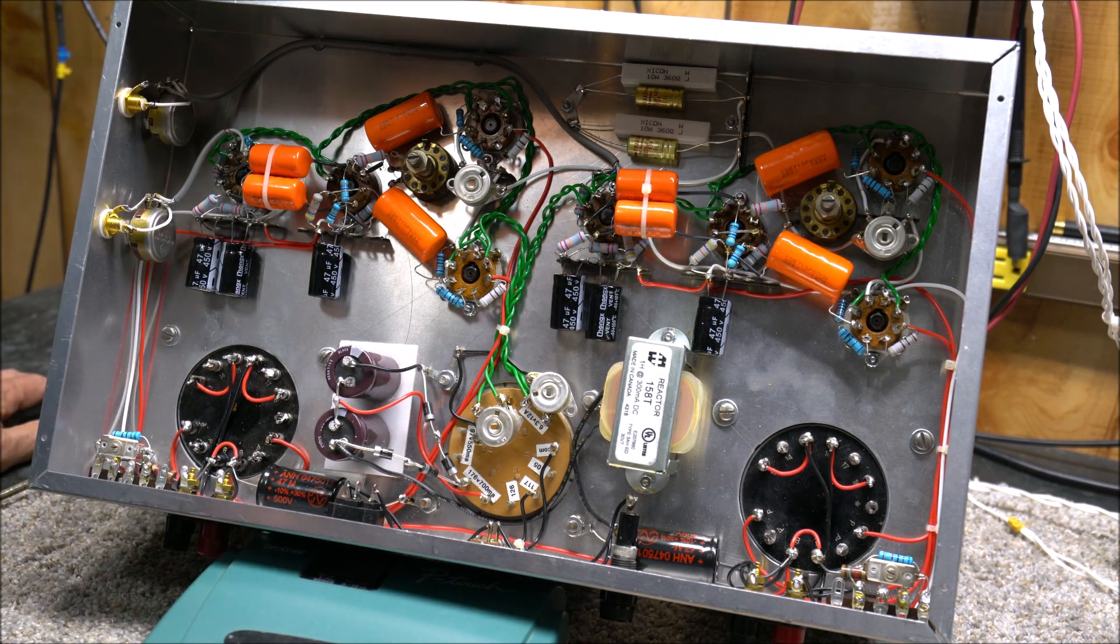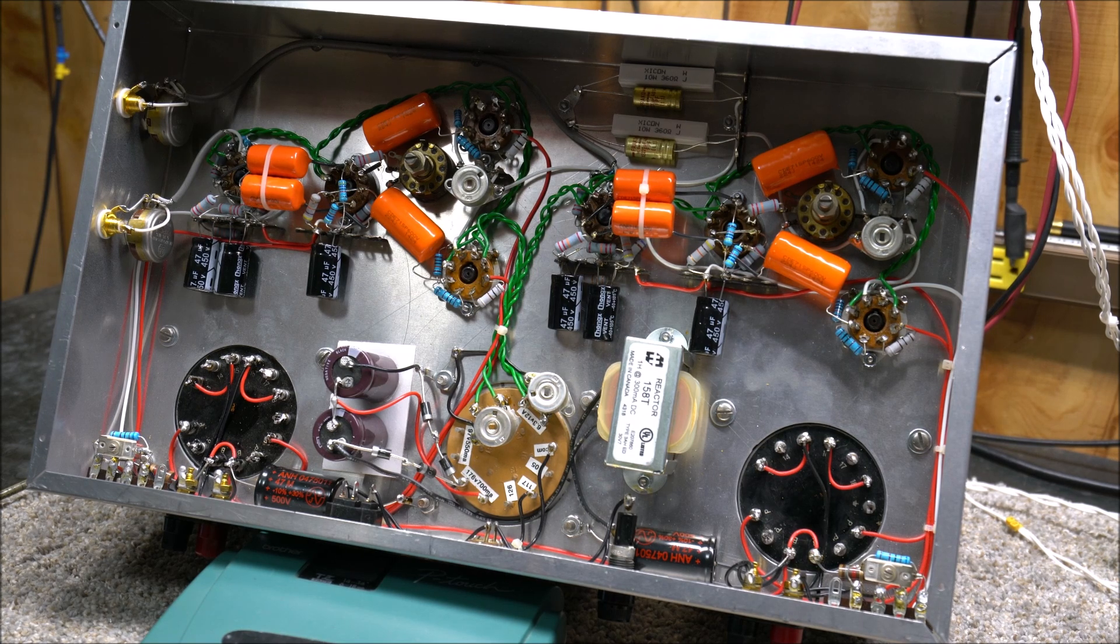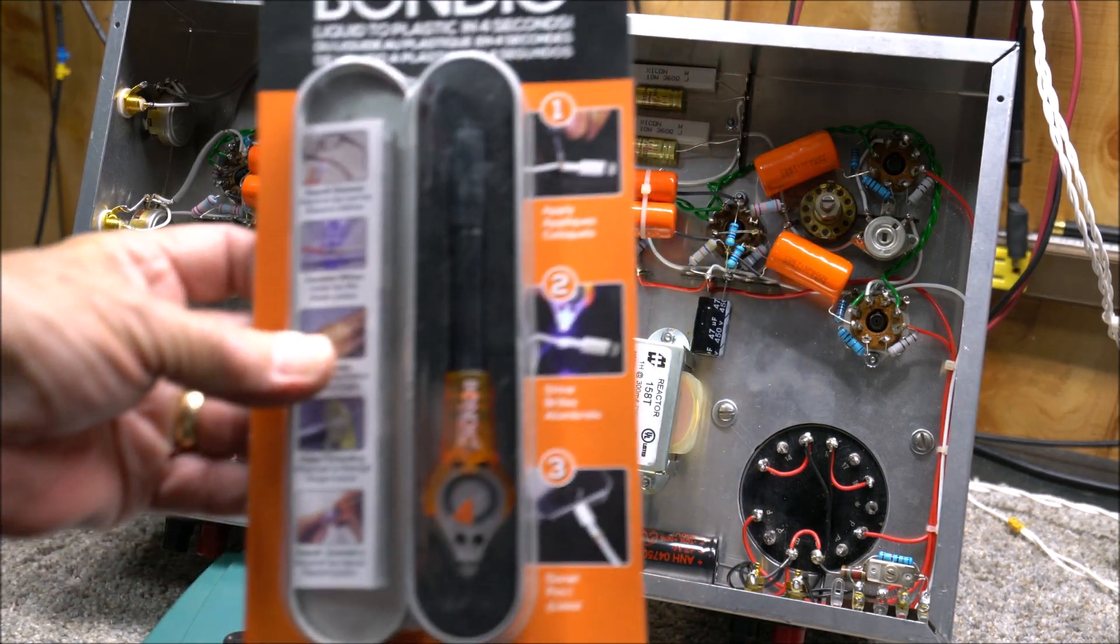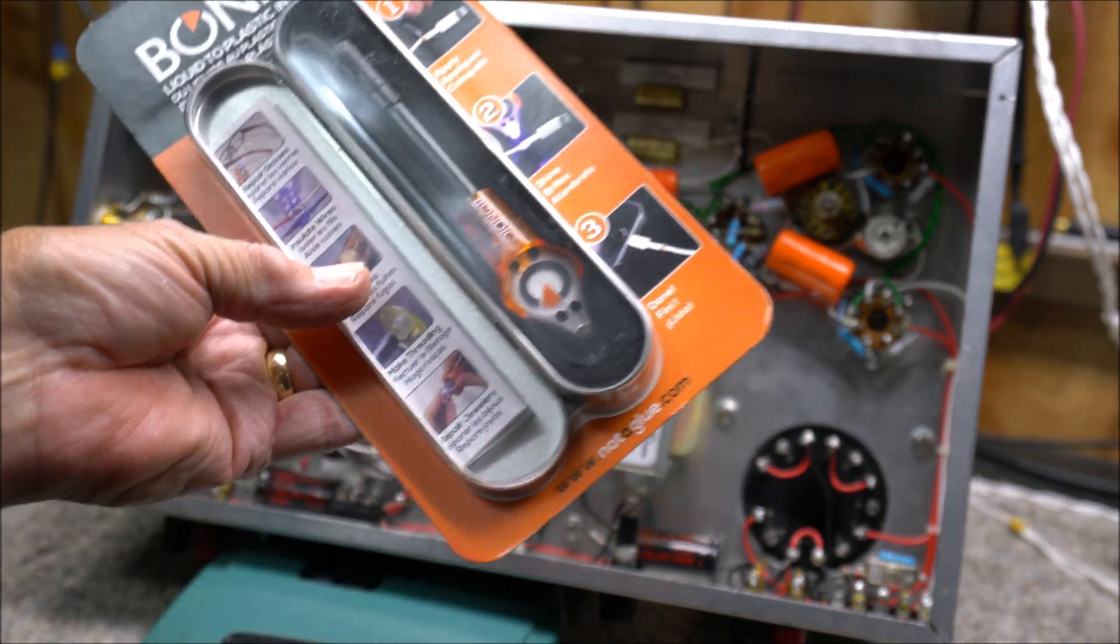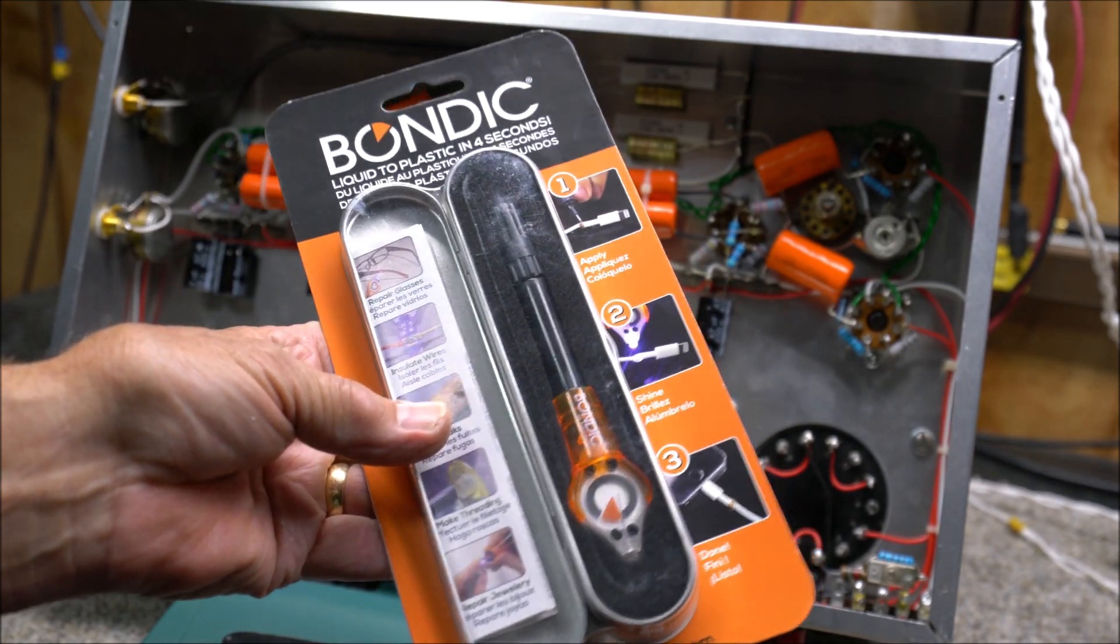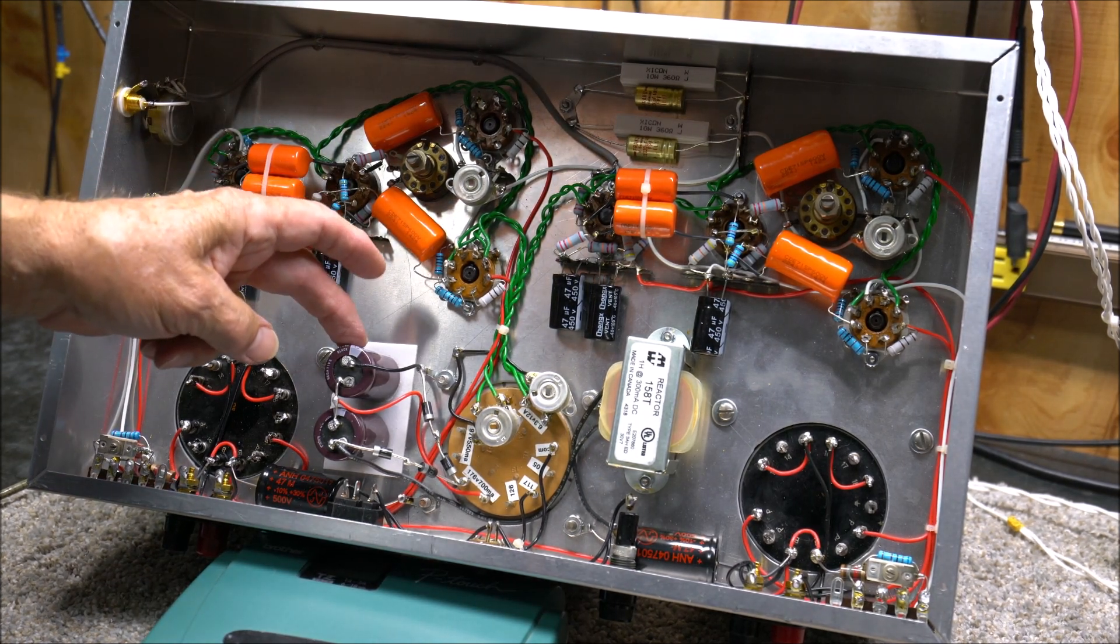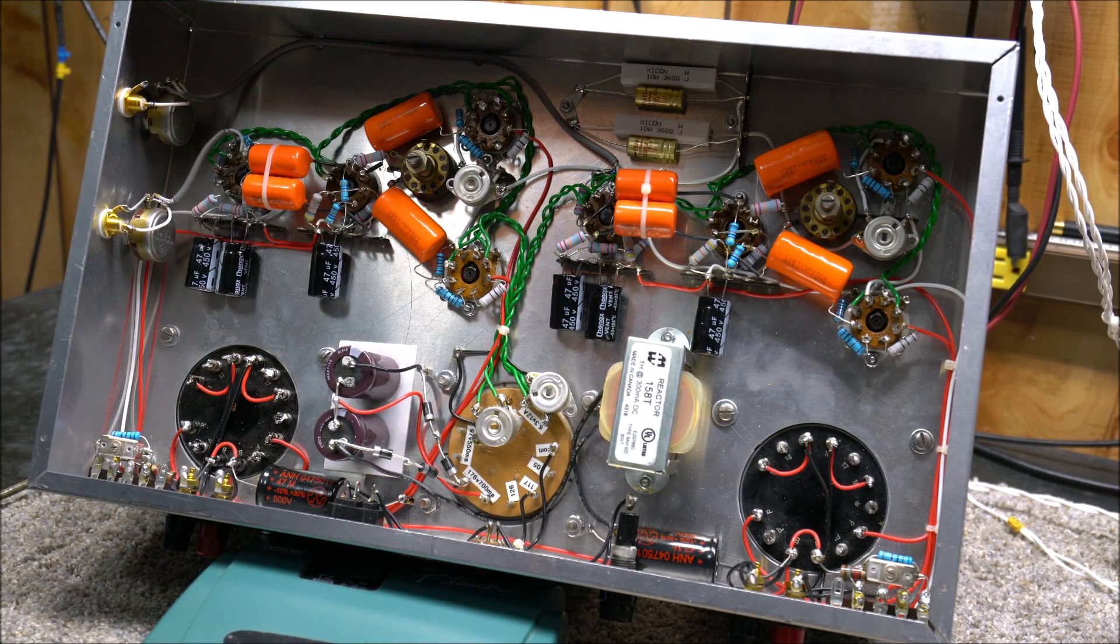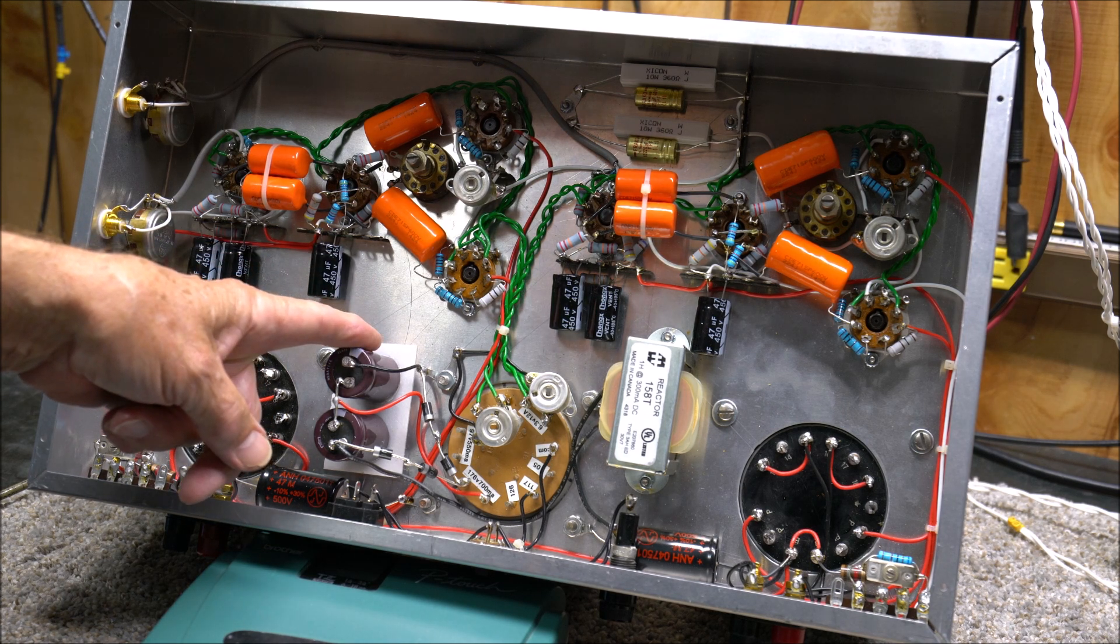Green wires are filament, red wires are typically higher voltages, and white wires are typically signal lines. I use shielded cable. To hold down wires, this glue with a blue light that you shine on it, stuff actually works and you can remove it.